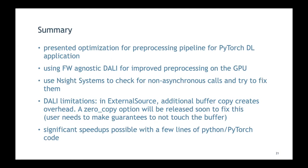In summary, the talk presented a step-by-step optimization of a pre-processing pipeline for a PyTorch deep learning application, showing how to use Nsight Systems to analyze the timeline, identify where performance is lost, and find calls that should be asynchronous but aren't. With just a few lines of Python code, roughly a 2x speedup was achieved on a DGX2 machine, and certain DALI limitations were identified, some of which will be fixed soon.